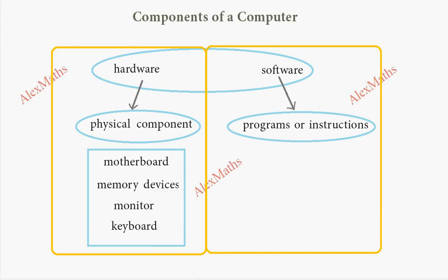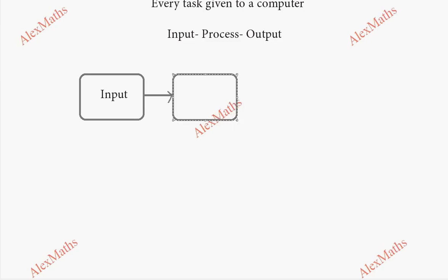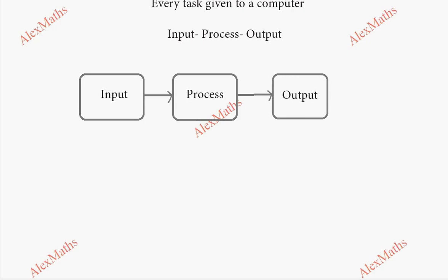Now, if a computer has to do one task, it will follow the input, process, output cycle. So the task comes in as input data, the computer processes it completely, and gives the output. This is the total input-process-output cycle, also called the IPO cycle.